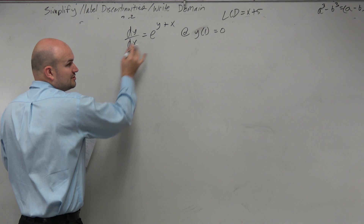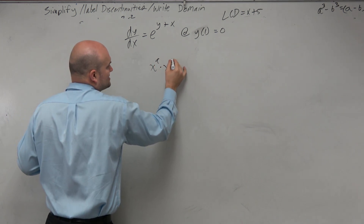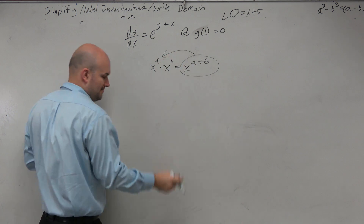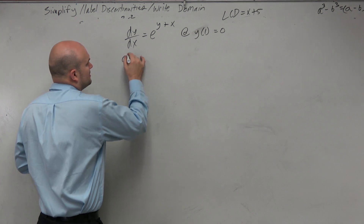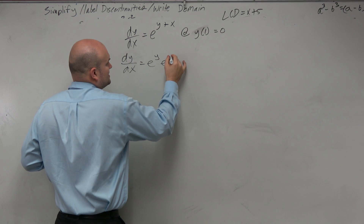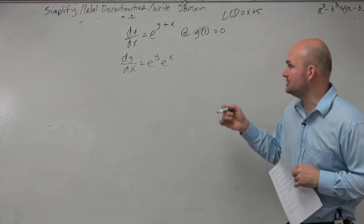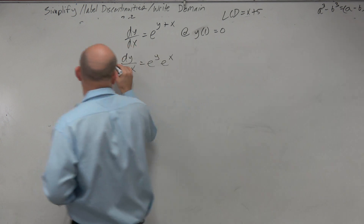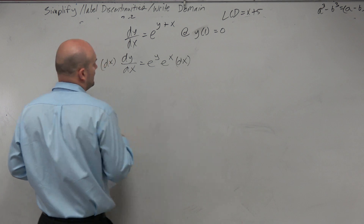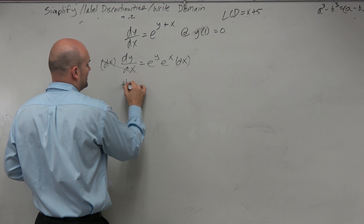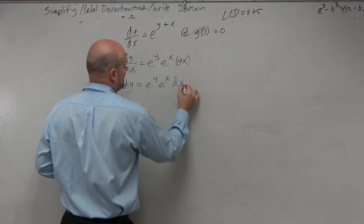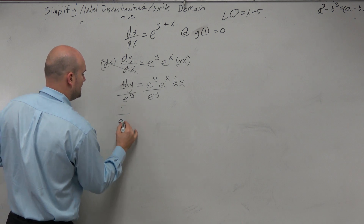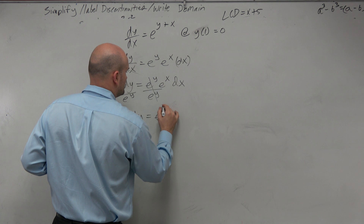However, what we can use is the rules of exponents, because we know that x to the a times x to the b equals x to the a plus b. So I want to work backwards. If I do that, I can rewrite this as dy over dx equals e to the y times e to the x. Now it's a little bit easier to separate these, because all I've got to do is divide by e^y and multiply by dx. So I get dy equals e to the y times e to the x dx. And now, to get the e^y over here, I can just divide by e to the y, leaving 1 over e to the y dy equals e to the x dx.